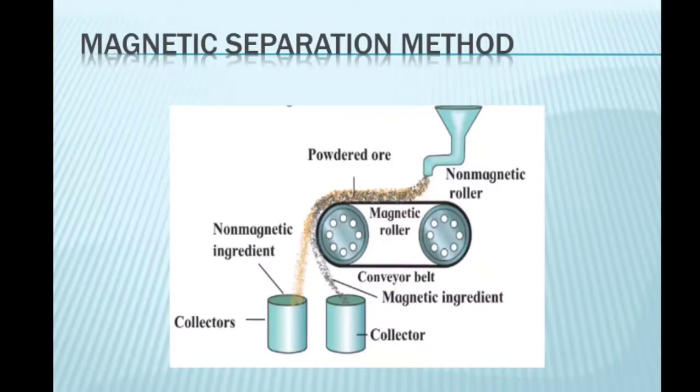Magnetic separation method. This method requires an electromagnetic machine. The main parts of this machine are two types of iron rollers and the conveyor belt moving continuously around them. One of the rollers is non-magnetic while the other is electromagnetic. The conveyor belt moving around the rollers is non-magnetic made up of leather or brass. The powdered ore is poured on the conveyor belt near the non-magnetic roller. Two collector vessels are placed below the magnetic roller.